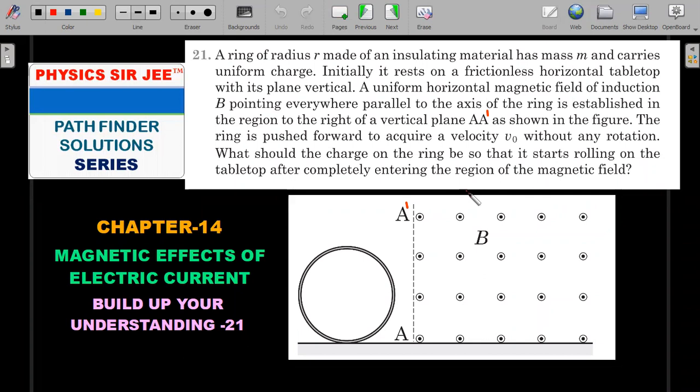A ring of radius r made of an insulating material has mass m and carries uniform charge. Initially it rests on a frictionless horizontal tabletop with its plane vertical. A uniform horizontal magnetic field of induction B is pointing everywhere parallel to the axis of the ring and is established in the region to the right of a vertical plane A-A' as shown in the figure. So field is only on the right side - it's a hypothetical situation. The ring is pushed forward to acquire a velocity v₀ without any rotation, so that means it's only translating velocity and the floor is frictionless.